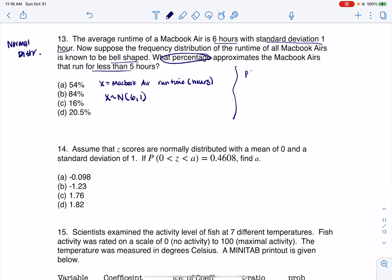I want the probability that I'm going to run for less than five hours. So this is a normal CDF calculation. We're going to run normalcdf. We're going to go low, high, mean, standard deviation.